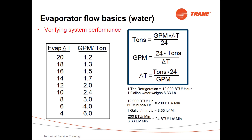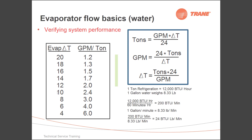So if I had a 100 ton chiller, that would mean that I would be pumping 240 gallons per minute through the chiller, and a 10 degree delta T would confirm that.